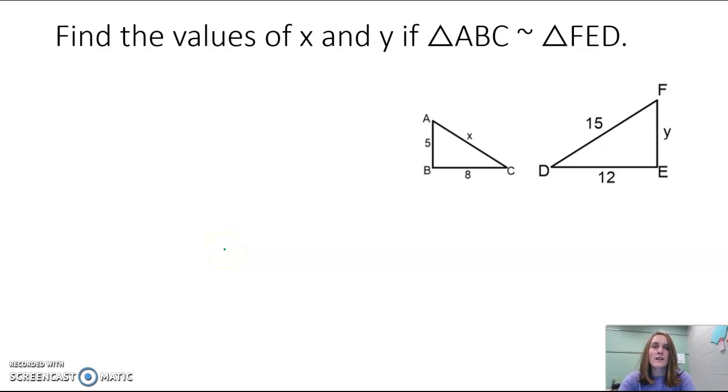Find the values of X and Y if triangle ABC is similar to triangle FED. So they're similar, they're not congruent, they're similar.